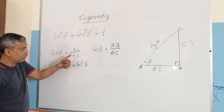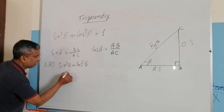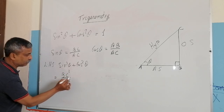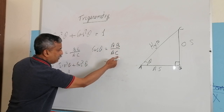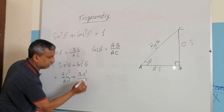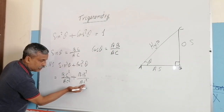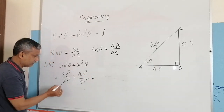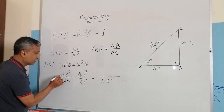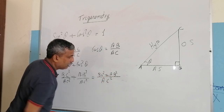Since sine theta is BC by AC, sine squared theta will be BC squared by AC squared. So the left-hand side equals BC squared by AC squared plus AB squared by AC squared. Since the denominators are the same, we can combine them: the denominator is AC squared and the numerator is BC squared plus AB squared.